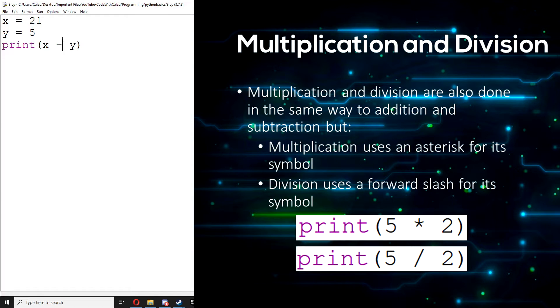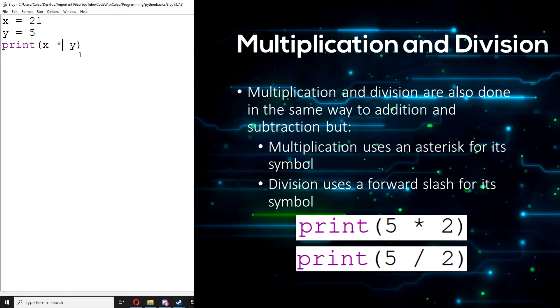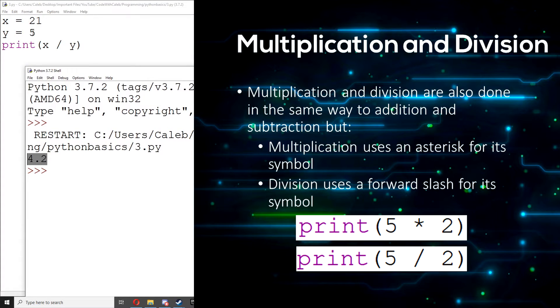Multiplication and division are the same as well. So we can just use an asterisk instead of a minus sign, run it. 21 times 5 is 105. Now if we divide, we can use a slash for the division symbol. Run, run module, 4.2 because 21 divided by 5 is 4.2.